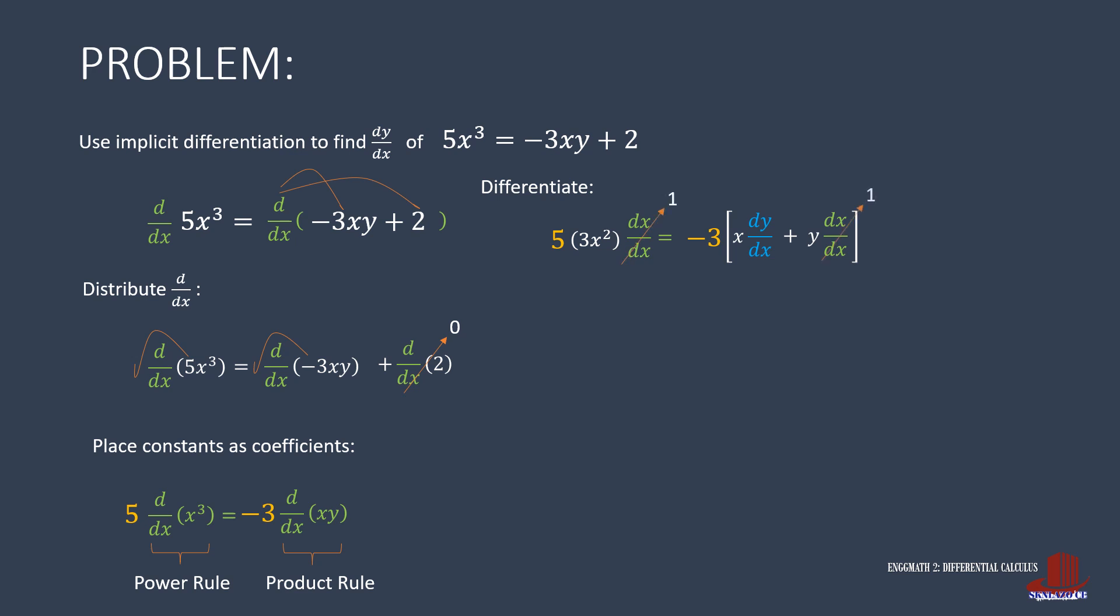There are 2 dx over dx in the equation, which will eventually cancel out as 1. So the simplified equation becomes 15x squared as equal to negative 3 times the binomial x times dy over dx plus y. Simplify the constants to have 5x squared as equal to negative x multiplied by dy over dx. Then also the negative is distributed to the second term, making minus y.